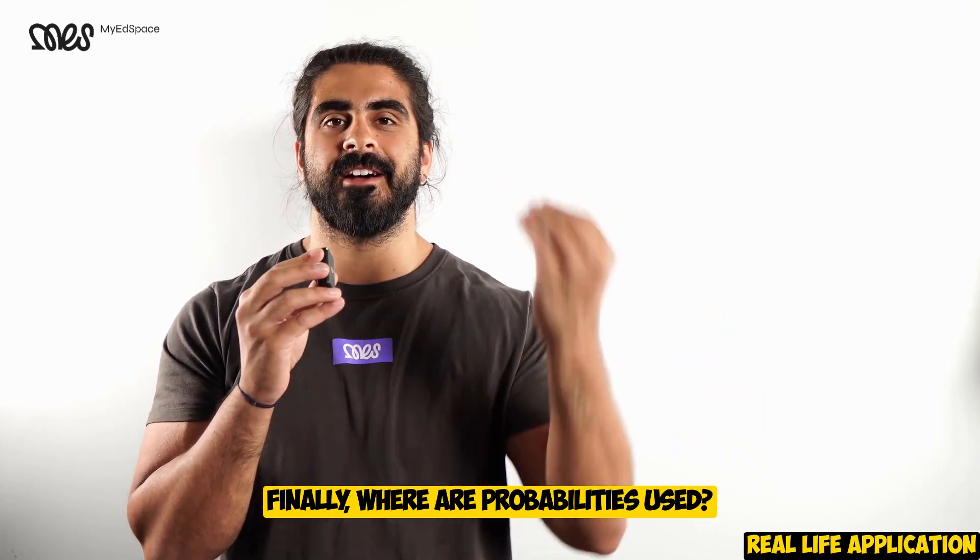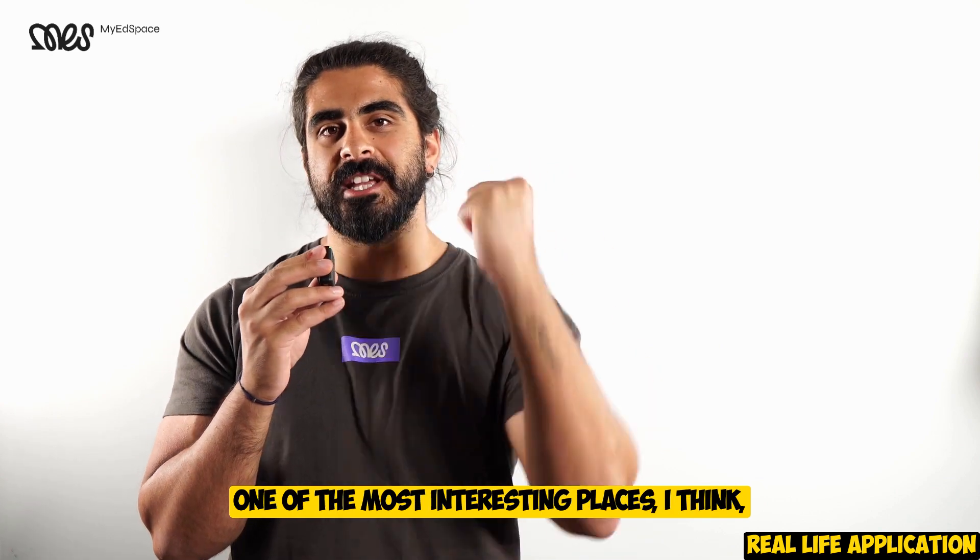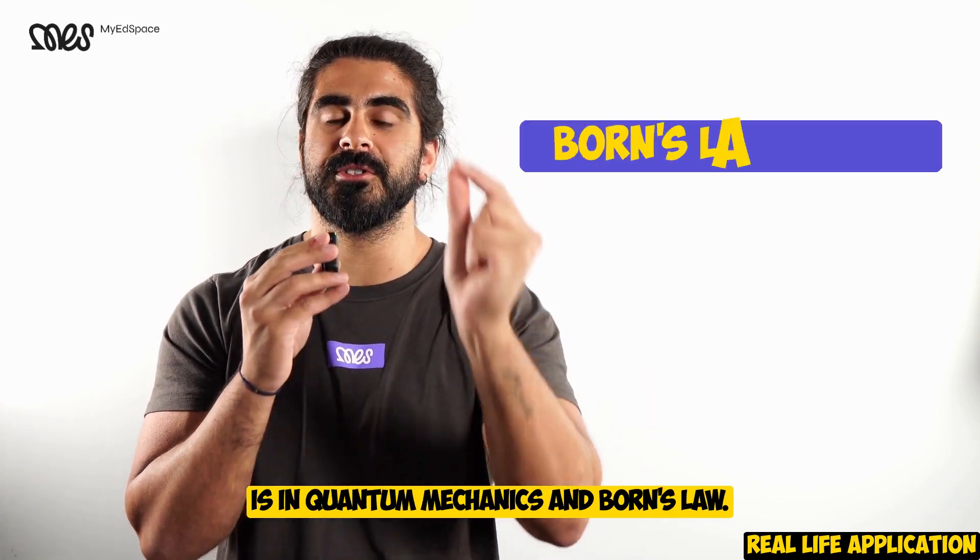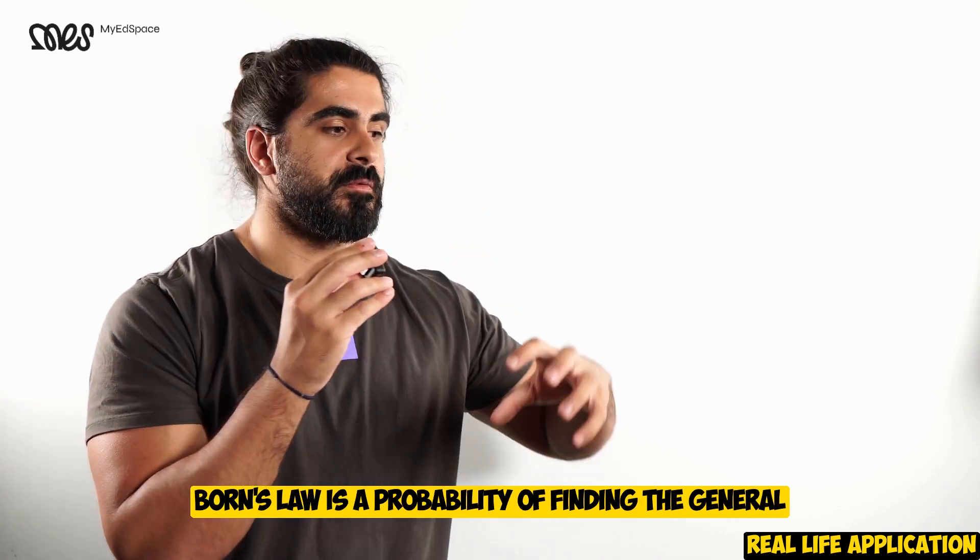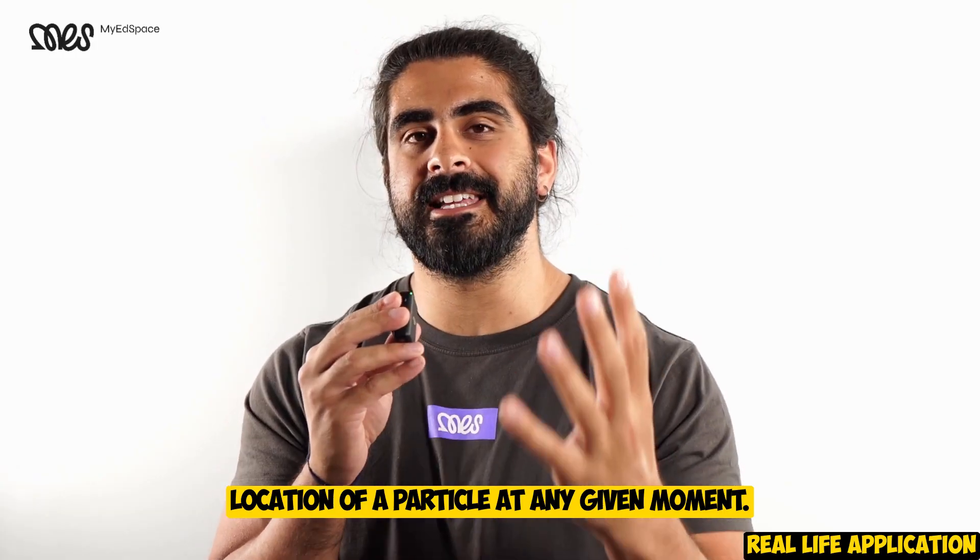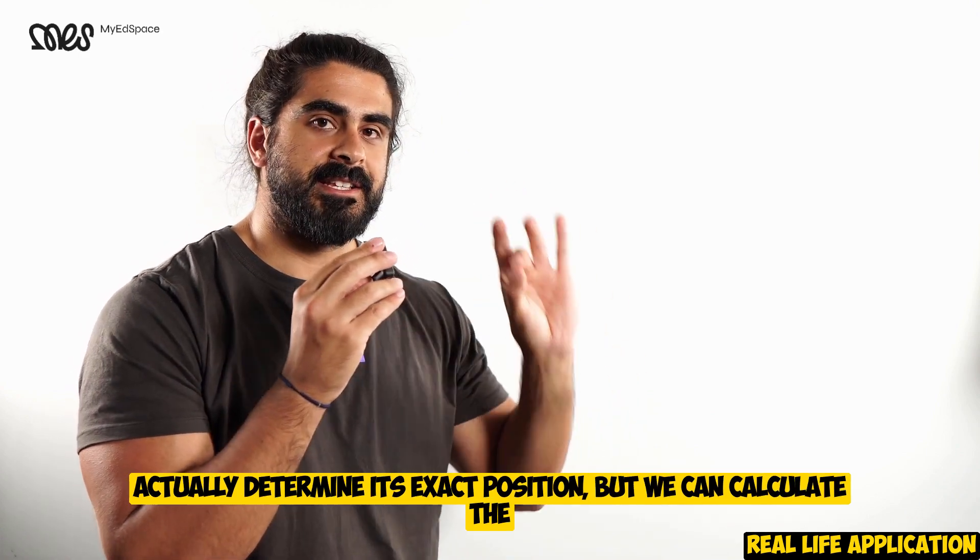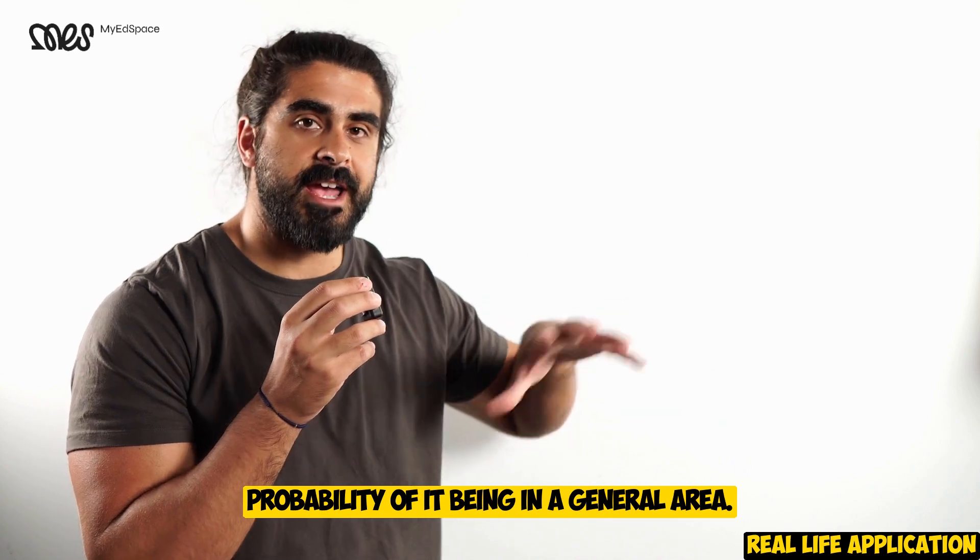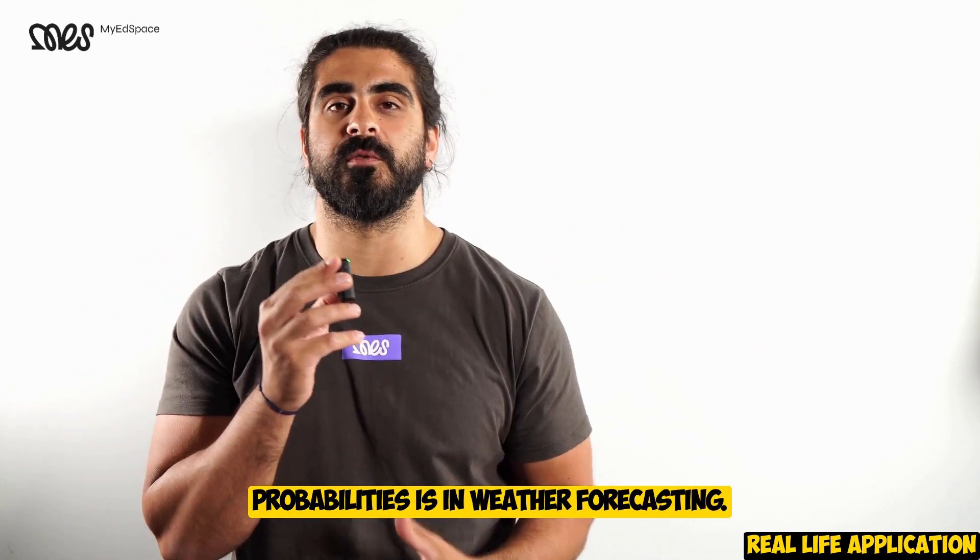Finally, where are probabilities used? Well, guys, probabilities are all around us. One of the most interesting places, I think, is in quantum mechanics and Born's law. Born's law is a probability of finding the general location of a particle at any given moment. Because if you're trying to locate an electron, we can't actually determine its exact position. But we can calculate the probability of it being in a general area.